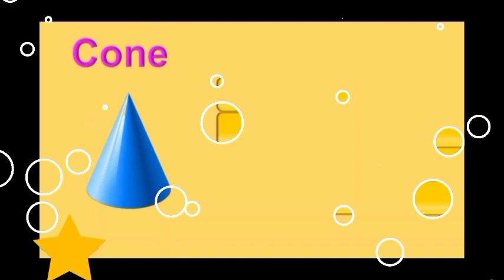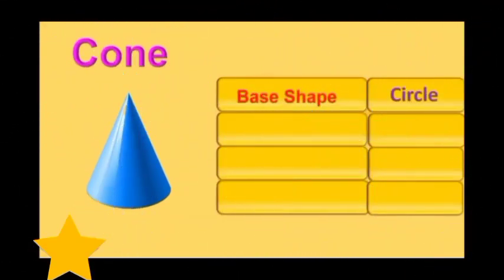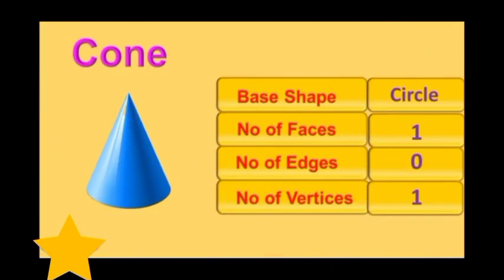Cone. Base shape: circle. Number of faces: 1. Number of edges: 0. Number of vertices: 1. Examples of cone.